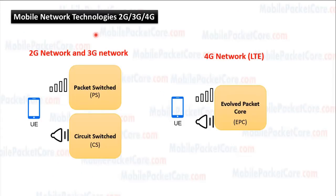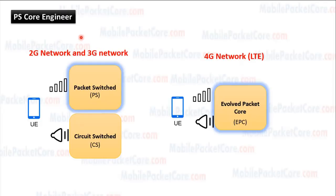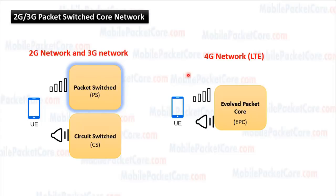Mobile network has different technologies: 2G, 3G, and 4G. In 2G and 3G, the mobile core network contains the packet switched core network that handles data sessions, and the circuit switched core network that handles voice calls. In 4G, it contains only a packet switched core network, which is the evolved packet core. PS core engineers are responsible for the packet switched core network in 2G and 3G, and the evolved packet core in 4G.